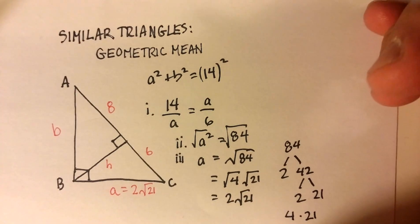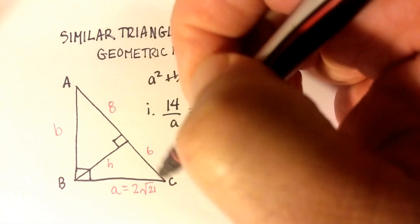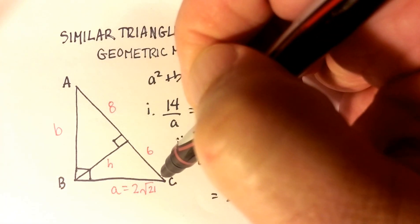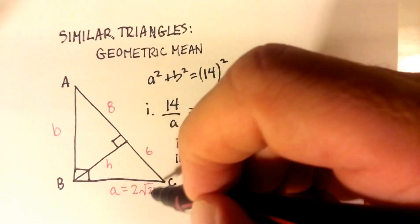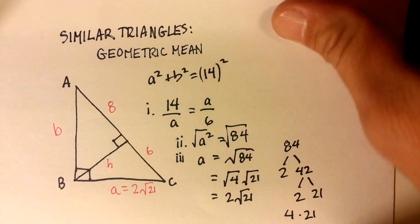Now we can figure out a whole bunch of things. Now we have that this hypotenuse is 14 squared. This A is 2 radical 21 squared. We could solve for B. So that's one thing we could end up doing.